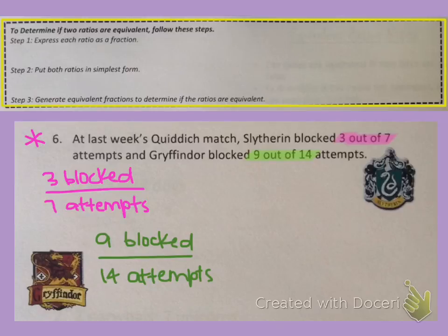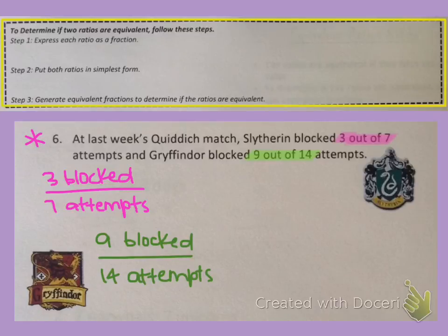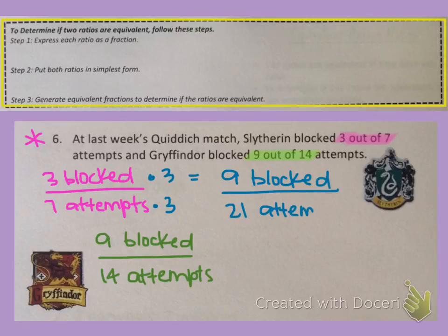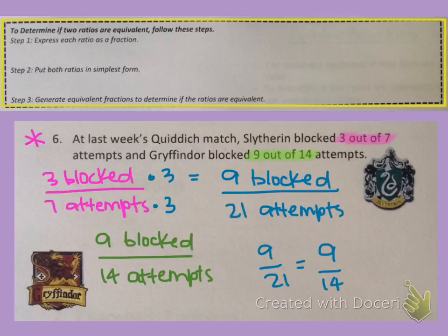So what did you notice? These are actually both in simplest form already, so step two is done for us. That takes us to step three, where we generate equivalent fractions to determine if the ratios are equivalent. Is there a way to make three over seven equal nine over fourteen? Looking at the numerators: three times three gives us nine. But we have to multiply the denominator by the same thing, so seven times three is twenty-one. Does nine over twenty-one equal nine over fourteen? No, they're not the same. So these are not equivalent ratios.